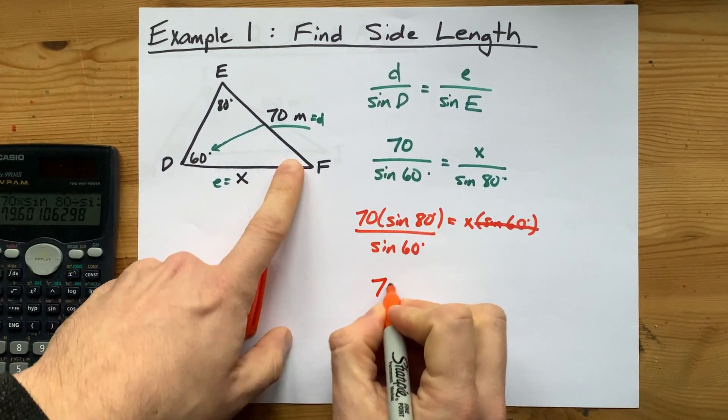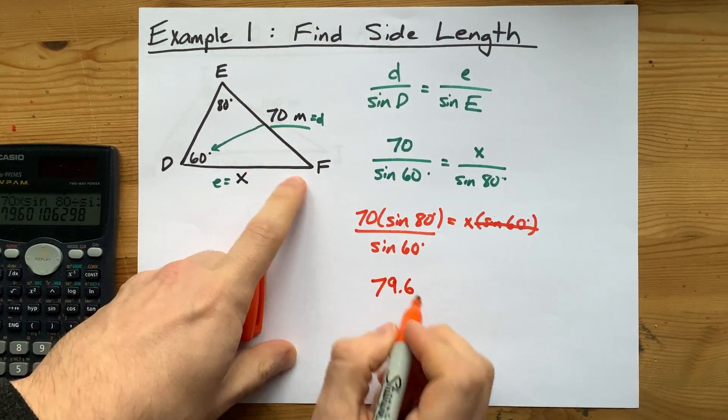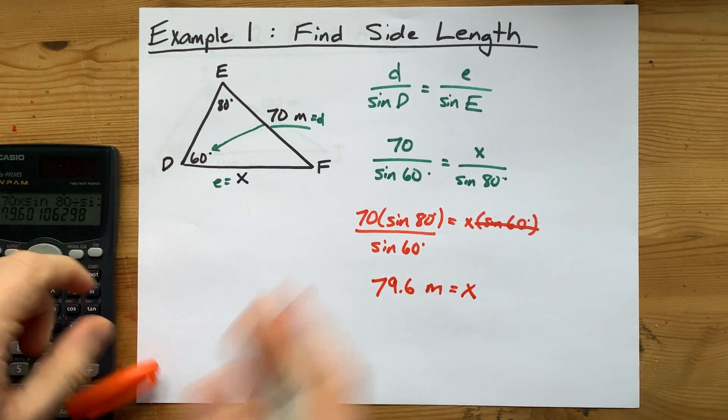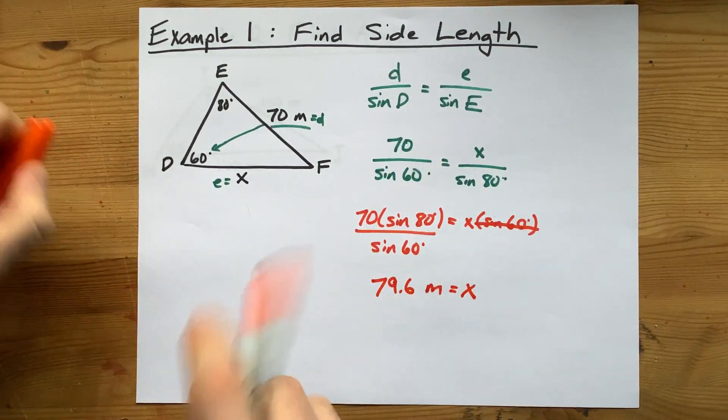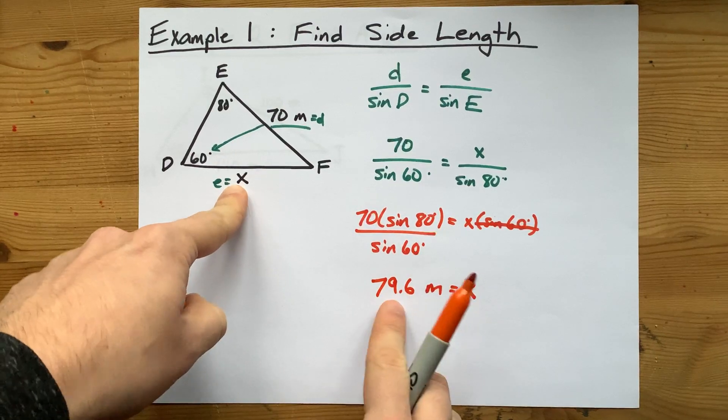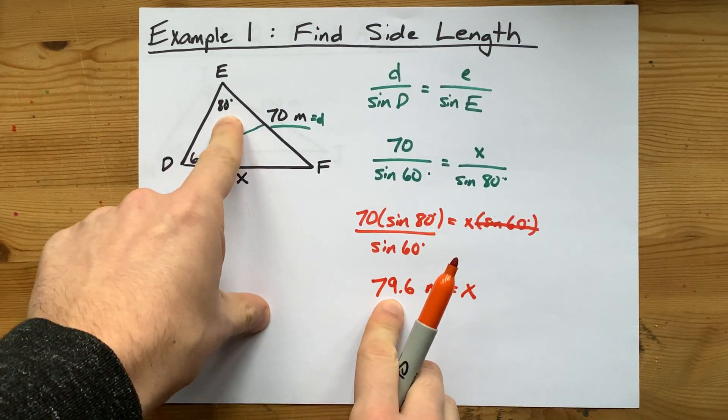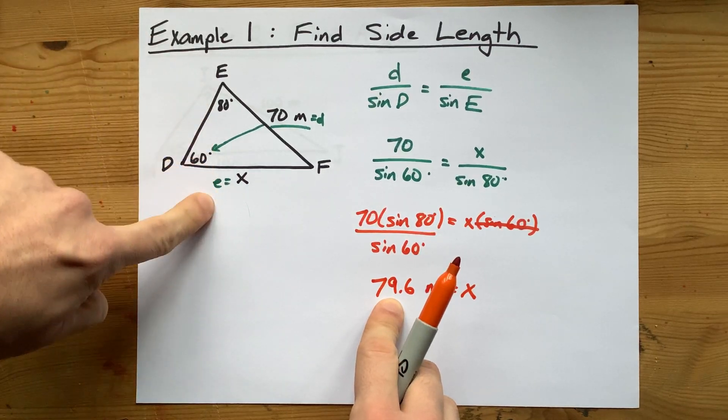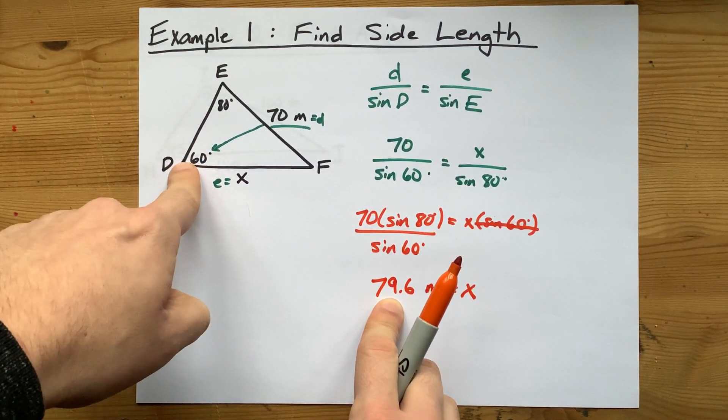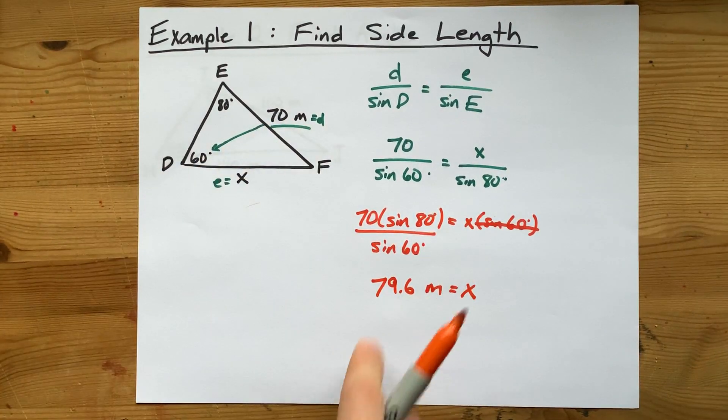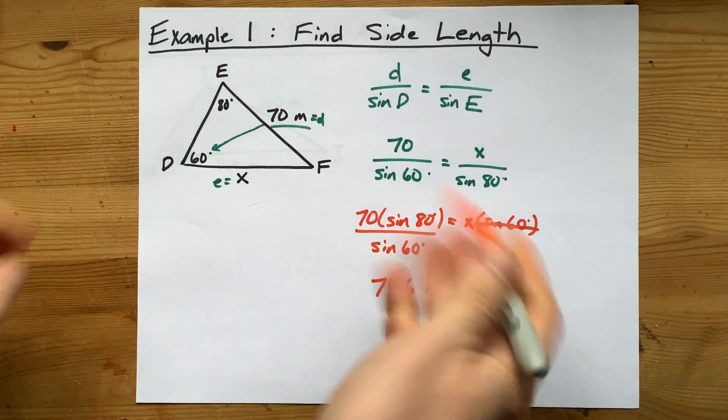Now that kind of makes sense to me. This side length was 70 meters. This one is almost 80. The other thing I'll point out is that longer sides are always across from larger angles. Because the angle across from the unknown side was bigger than 60, I expected that side length to be bigger than 70. And it was. Great.